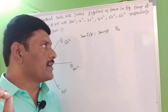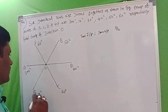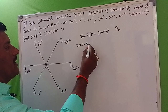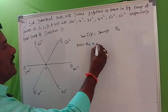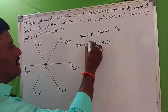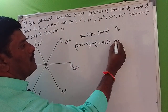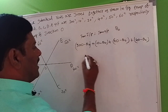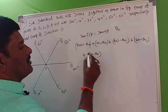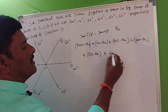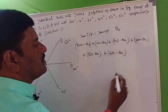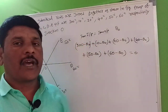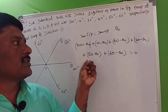Since input temperature equals output temperature, the sum of heat flows must balance. We write: (300 − θ₀) + (10 − θ₀) + (20 − θ₀) + (40 − θ₀) + (50 − θ₀) + (60 − θ₀) = 0. The sum of all temperature differences equals zero.